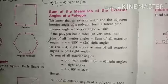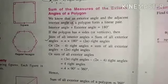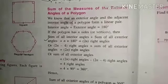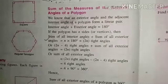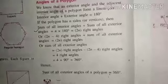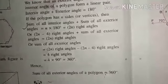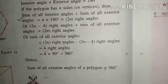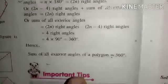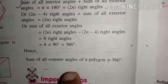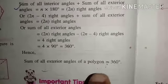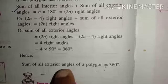Dear students, now I am going to explain you one formula. The sum of all the exterior angles of a polygon equals 360.